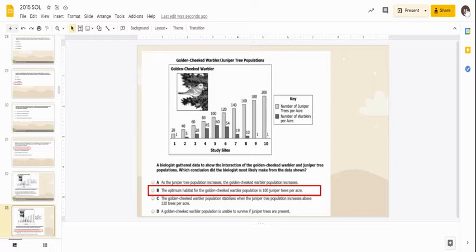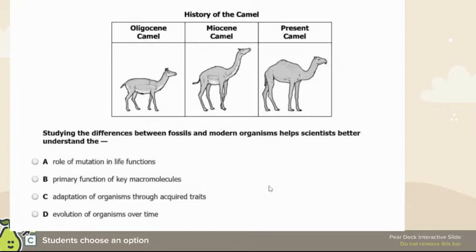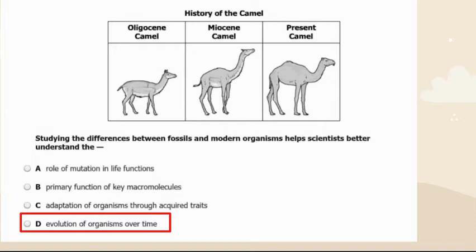Studying the history of the camel and differences over time — we study differences to see how organisms evolve over time. That's how we study evolution: looking at differences in similar and different species. Anytime there's a change over time, think evolution.